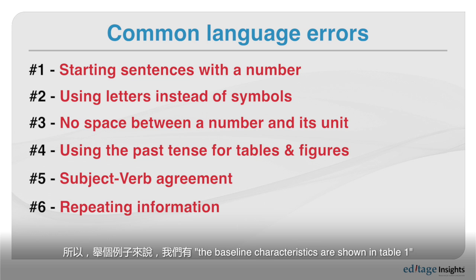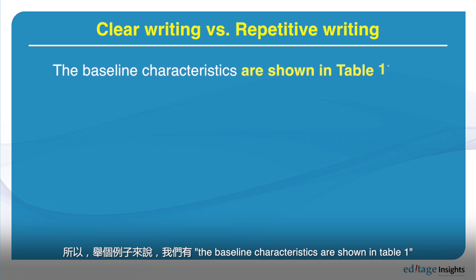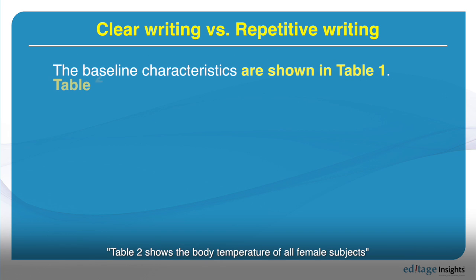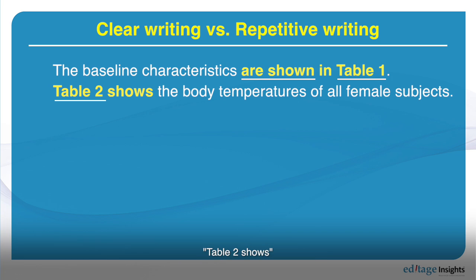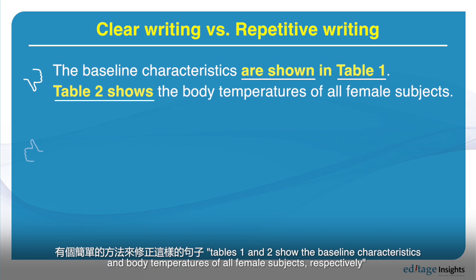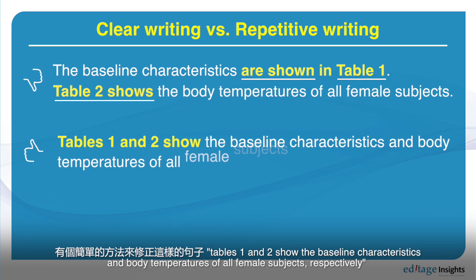As an example: 'The baseline characteristics are shown in table one. Table two shows the body temperature of all female subjects.' We have table one, table two, characteristics are shown, table two shows — all of this information is repeated back to back. An easy fix is to say: 'Tables one and two show the baseline characteristics and body temperatures of all female subjects, respectively.'